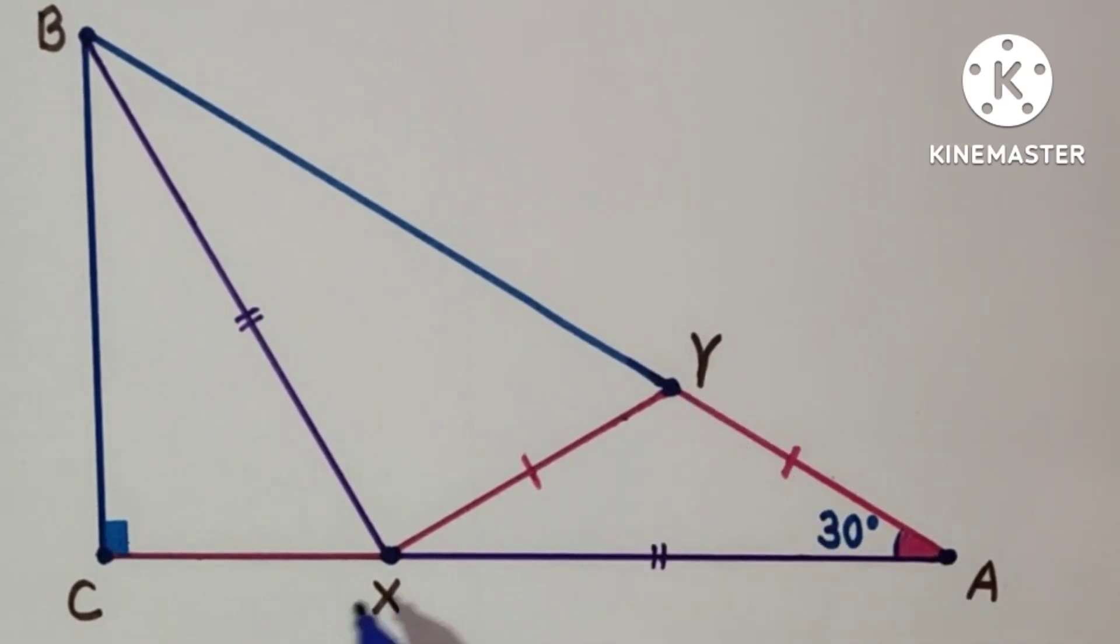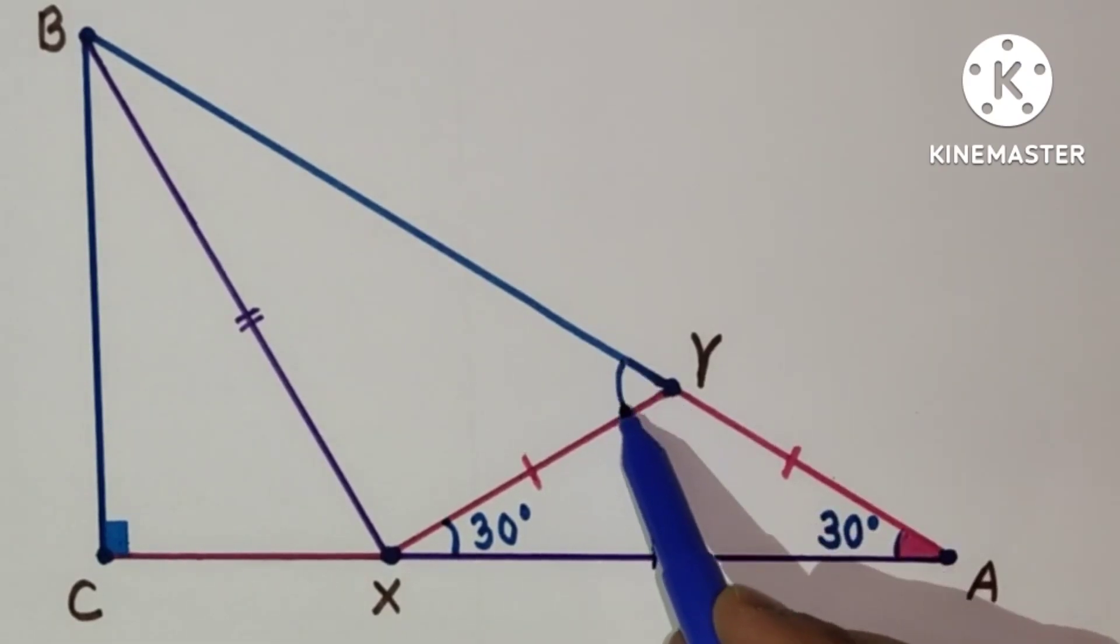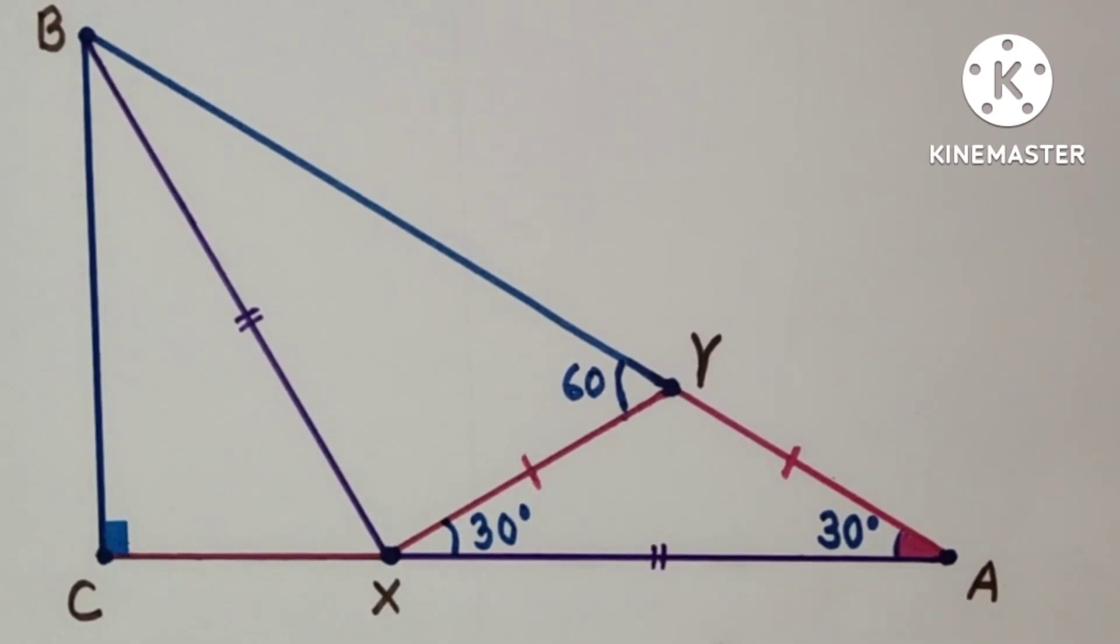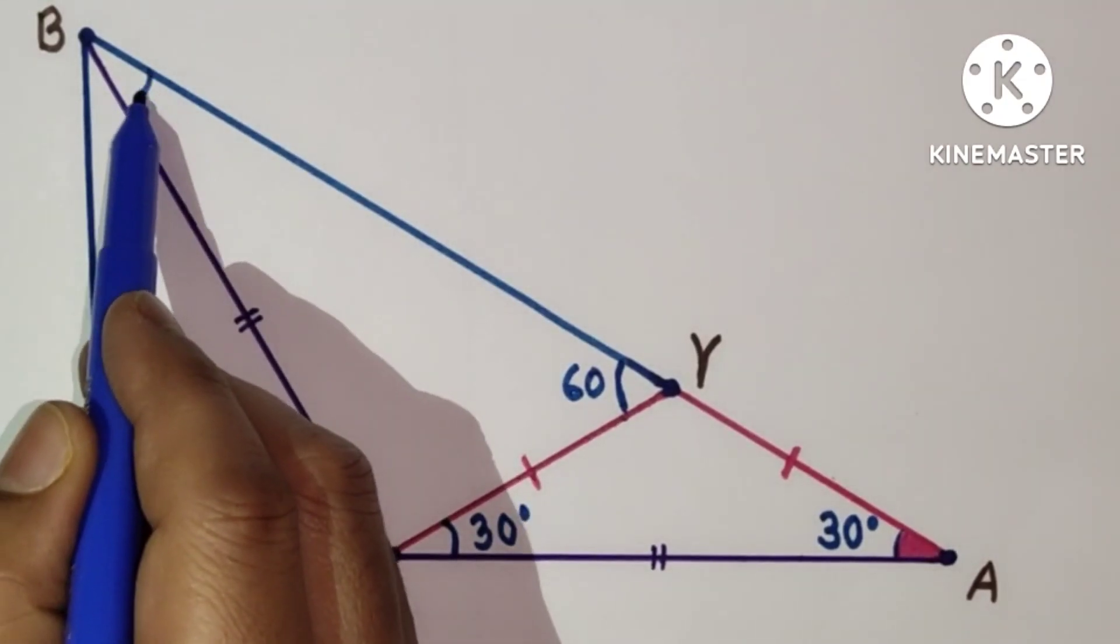Therefore since triangle YXA is an isosceles triangle, this angle will also be 30 degrees. Now this is 30 degrees, this is 30 degrees, and this exterior angle is sum of these two, so will be 60 degrees. XA and XB both sides are equal, so this is also an isosceles triangle and therefore this angle and this angle will both be 30 degrees.